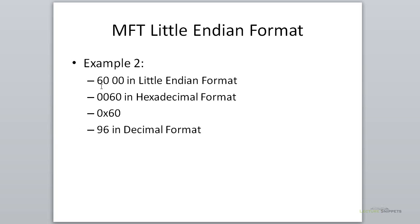Example number 2: 60, 00. If that is in Little Endian format, I'm going to take from the right — the set all the way to the right — and put that in the front, then keep working my way to the left. So 60 comes next. In hexadecimal format, it's actually going to be hexadecimal 60. And if I were to convert that number to decimal format, that would be 96 in our decimal numbering system.